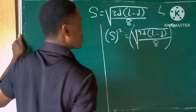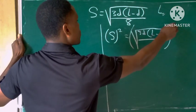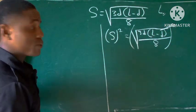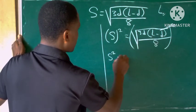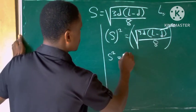So this square will cancel out the square root, so we are left with s squared equal to 3d(l minus d) all over 8.